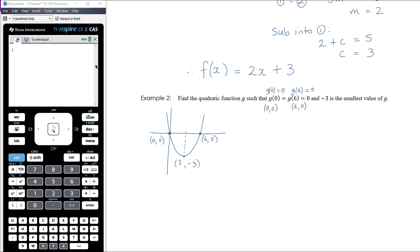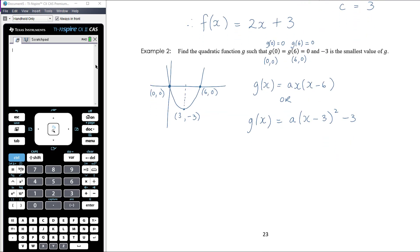You could start with the x-intercepts, which would tell you that g(x) is equal to a times x times (x - 6), and then you could substitute in the turning point to find the value of a. Or you could start with turning point form and know that it's a(x - 3)² - 3 because of the turning point, and then use either of the intercepts to find the value of a. Either are going to get you there. Let's maybe go with the turning point.